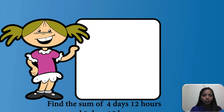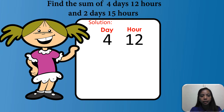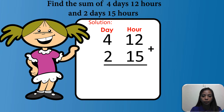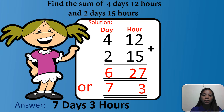Last example in addition. Find the sum of four days, 12 hours and two days, 15 hours. Don't forget to write the unit day and hour. We have four days and 12 hours, plus two days and 15 hours. Let's solve the hours first: 12 plus 15 equals 27. Then the days: four plus two equals six. Since 27 is greater than 24 hours, we need to convert it. 27 minus 24 equals three hours. And the one day will be added into six days: six plus one equals seven. So the final answer is seven days and three hours.